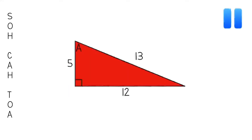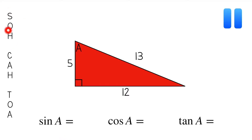Let's try this with one more triangle. Find the sine, cosine, and tangent of angle A — feel free to pause the video. For sine of A, SOH — opposite over hypotenuse — 12 is the leg opposite angle A and 13 is the hypotenuse, so sine of A is 12 over 13. For cosine, CAH — adjacent over hypotenuse — 5 is adjacent to angle A and 13 is the hypotenuse, so cosine of A is 5 over 13. And for tangent, TOA — opposite over adjacent — gives us 12 over 5.